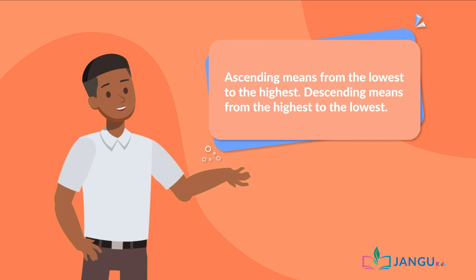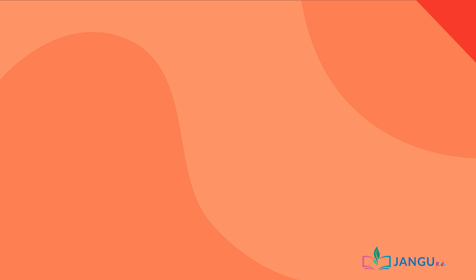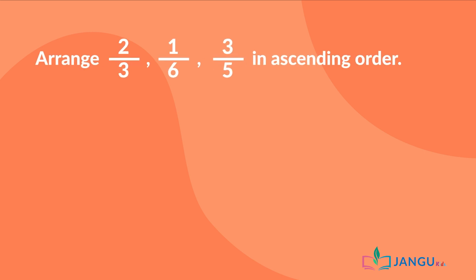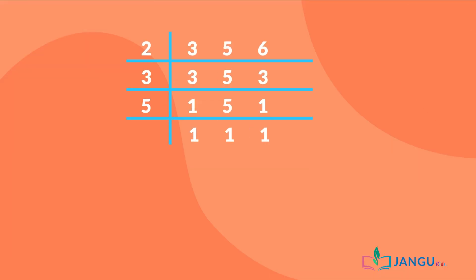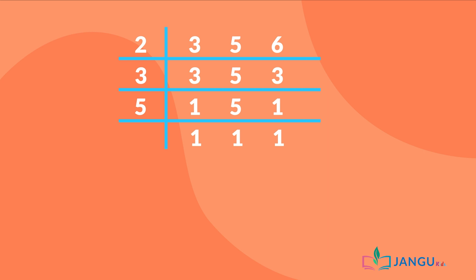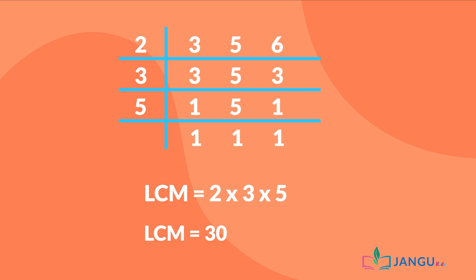Now let's get started with this example. Arrange 2 over 3, 1 over 6, and 3 over 5 in ascending order. First, we need to find the LCM of the denominators of the fractions in question — that is 3, 6 and 5. Using our previous knowledge on finding LCM, we know that the LCM of 3, 6 and 5 is 30.